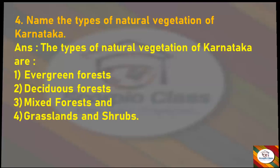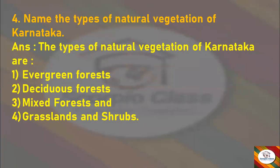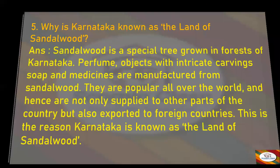Next question: Name the types of natural vegetation of Karnataka. Answer: The types of natural vegetation of Karnataka are Evergreen Forests, Deciduous Forests, Mixed Forests, and Grasslands and Shrubs.